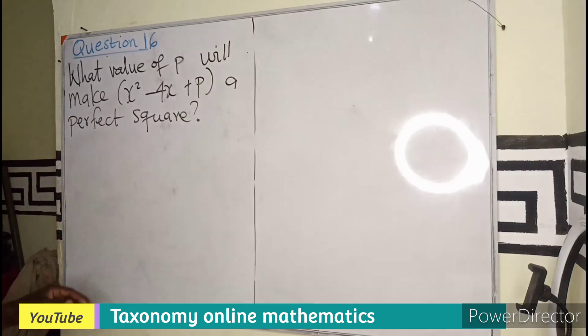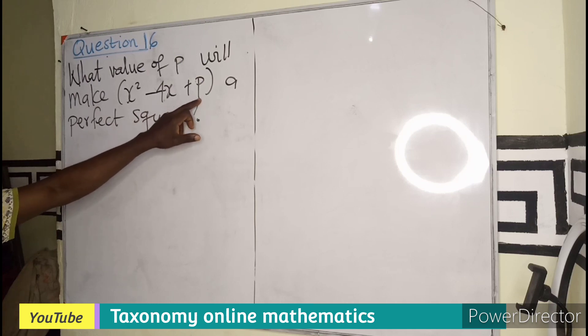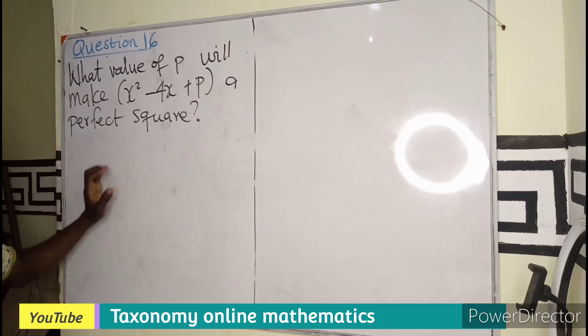So this is quadratic. It's about the value of P. P is the constant term here. We'll make this quadratic equation a perfect square.